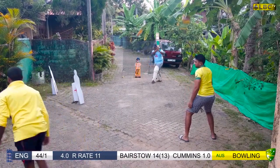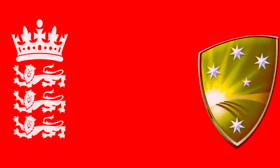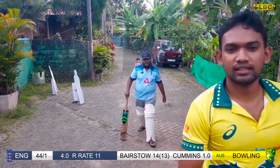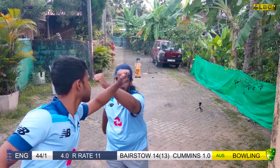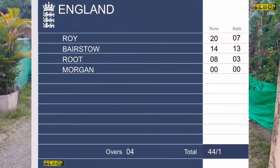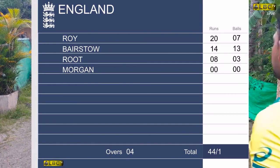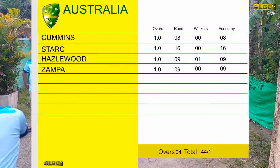It's 44 for one — what they have taken after their four overs. A good score on this track. Jonny Bairstow played his part with 14 runs, and Jason Roy top scored with 20 runs from seven deliveries. Joe Root got 8 runs off three deliveries. So 44 is the total for England's innings. For the bowling, Australia's Josh Hazlewood got the wicket of Jason Roy.